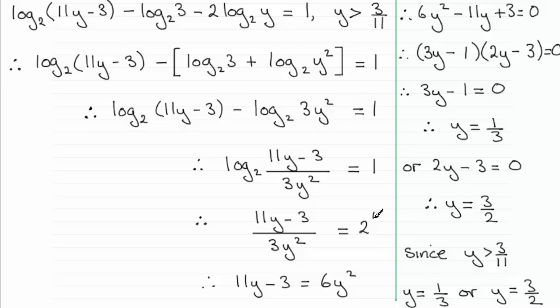2 to the power 1 is 2 and so I've got a simple equation now where I can multiply through by 3y squared and that will now give me 11y minus 3 equals 6y squared. I can see I've got a quadratic equation looming up here now, so I need to rearrange it, make it equal to 0, which is what I've done. And then I can solve this either by the quadratic formula or better still, just by factorizing, which I've done here.